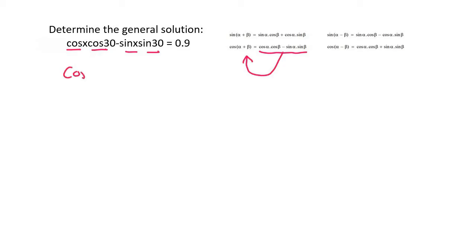So it tells us that should turn into cos(x + 30) equals 0.9, and now this is easy. We've been doing ones like this since grade 10.